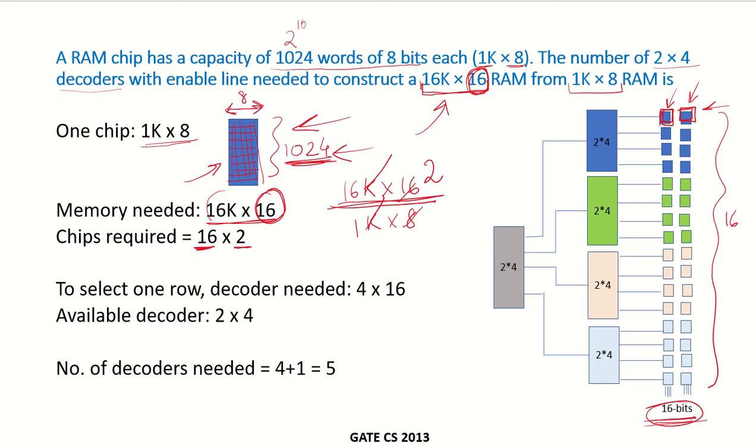Now, if we have to select a row out of these 16 rows, we actually need a 4 by 16 decoder. However, the decoder that is available is 2 by 4 only. That means each decoder can choose only between 4 rows.